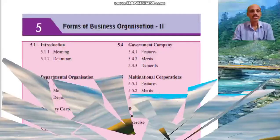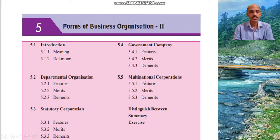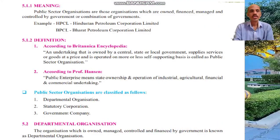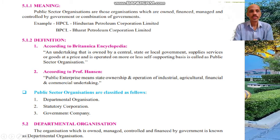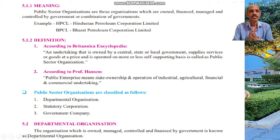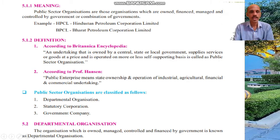Hello students, today we are starting a new chapter — Chapter number five: Forms of Business Organization. Public sector organizations are those organizations which are owned, financed, managed, and controlled by the government or a combination of governments. Examples include HPCL — Hindustan Petroleum Corporation Limited — and BPCL — Bharat Petroleum Corporation Limited.